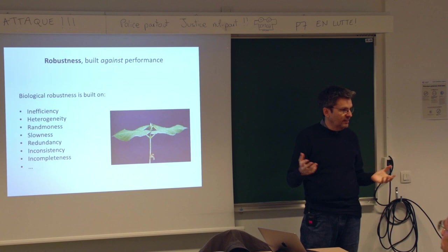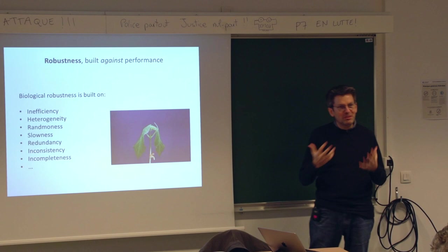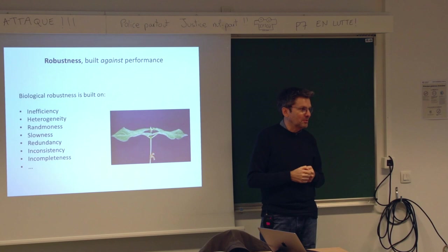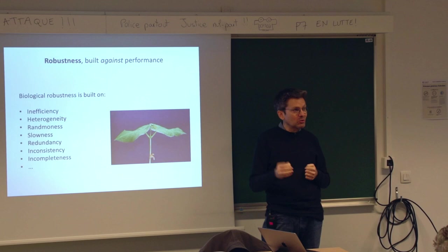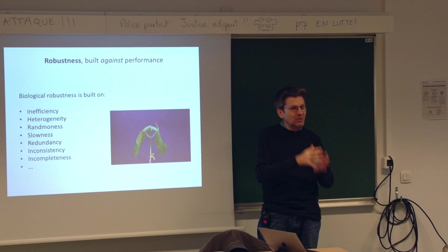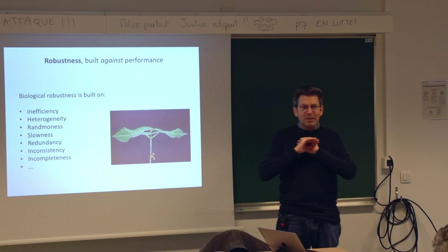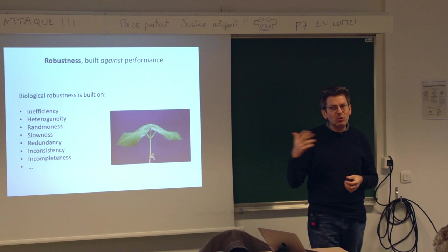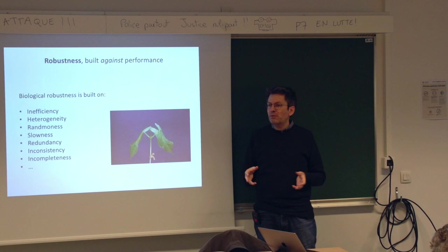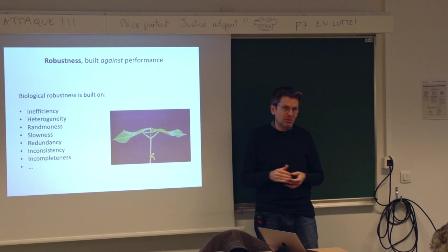The question is: how do they manage to be robust? And I think this is the most interesting part. Robustness is built against performance. Living beings are not trying to be performant and robust. They are robust because they are not performant. I say this with confidence because this was known in ecosystems in the 1980s, and for the past 20 years it has been demonstrated at the molecular scale as well. So now this is true from the molecule to the ecosystem — a general principle of life.